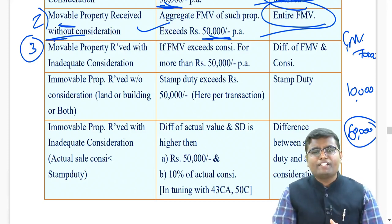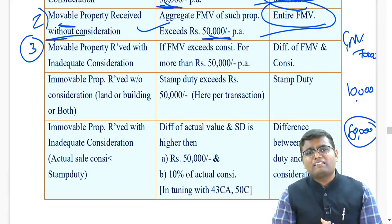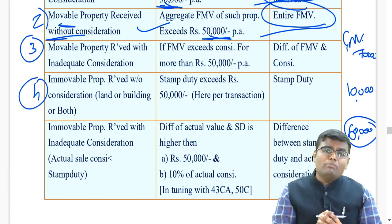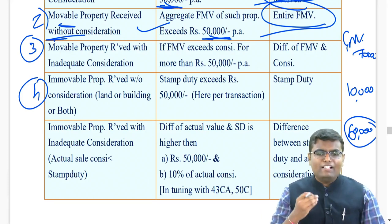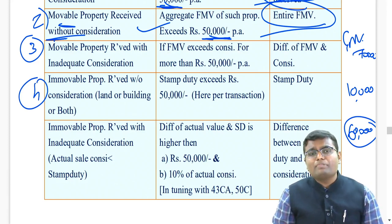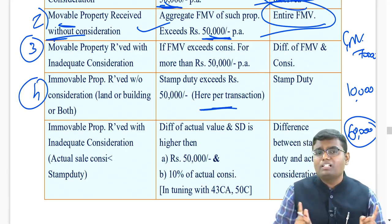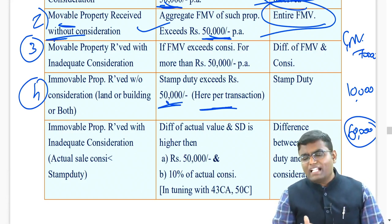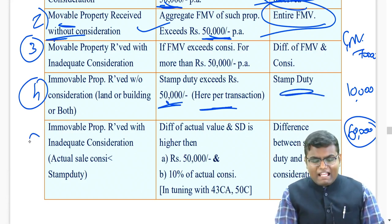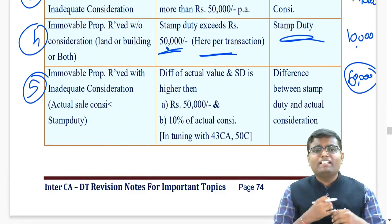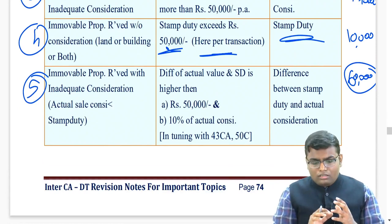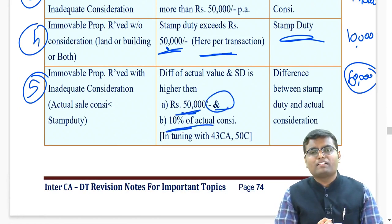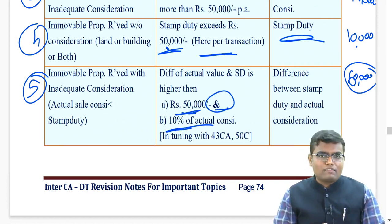For movable property received with inadequate consideration, see whether the fair market value exceeds the consideration by more than ₹50,000; if yes, the entire difference will be taxable. Fourth: immovable property received without consideration - you receive land or building with no consideration. Then see what is the stamp duty per transaction - here you check per transaction, not per annum. If the stamp duty of the property received as a gift exceeds ₹50,000, that entire stamp duty will be taxable. Fifth: immovable property received at inadequate consideration - see what is the difference amount. If that difference amount is more than ₹50,000 and it is also more than 10% of actual consideration, that difference will be taxable under IFOS.